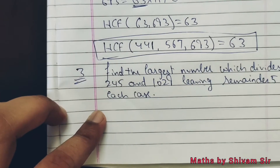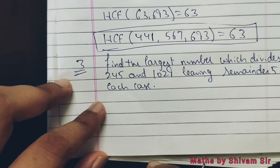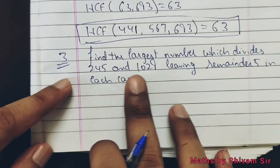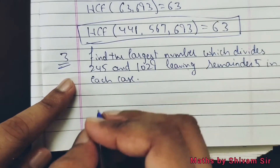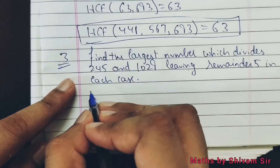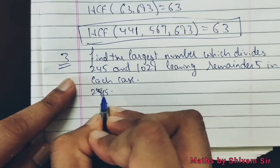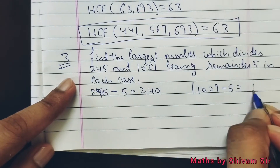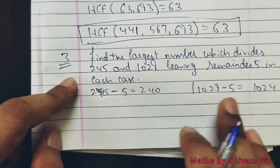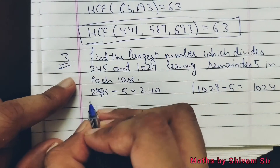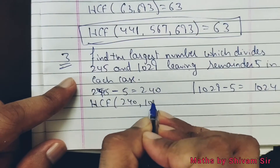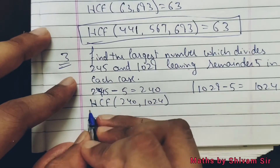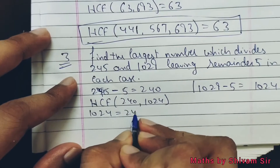Next category: find the largest number which divides 245 and 1029 leaving remainder 5 in each case. Iska matlab: us number ko nikalna hai jo dono numbers ko divide kare aur remainder 5 bachaye. Jab bhi is tarah ka question aaye, dono mein se remainder minus kar do: 245 minus 5 = 240, and 1029 minus 5 = 1024. Ab humko kya karna hai — find HCF of 240 and 1024 using Euclid's division algorithm. 1024 ko likho.